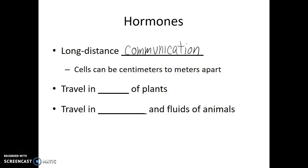In plants, these hormones travel in the sap, whereas for animals, these hormones will travel in the blood.